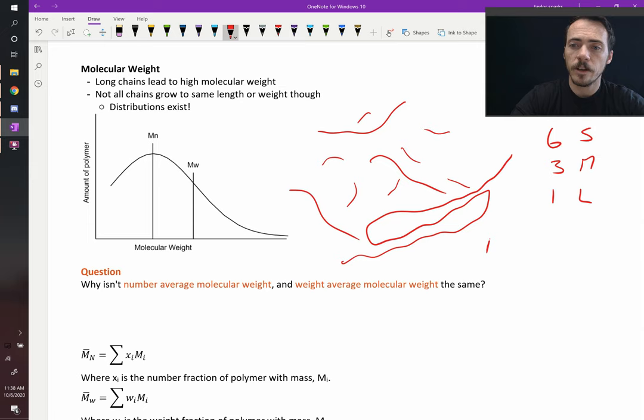So when we calculate our number average molecular weight, you'd say 60% times the molecular weight of our short chain plus 0.3, so 30% times the molecular weight of our medium chain plus 0.1% of the molecular weight times our long chain. That's one way you could do it. That would be the number average molecular weight.